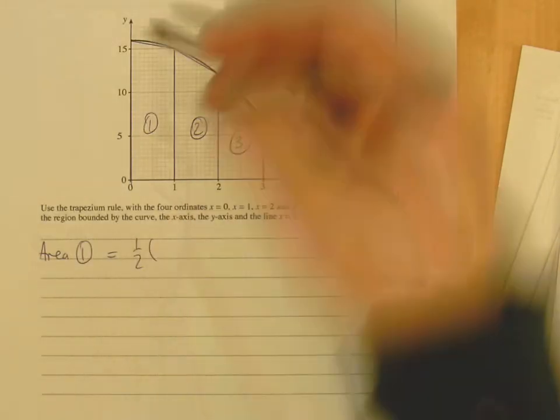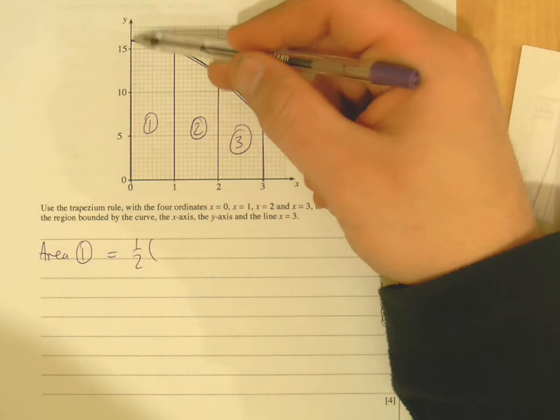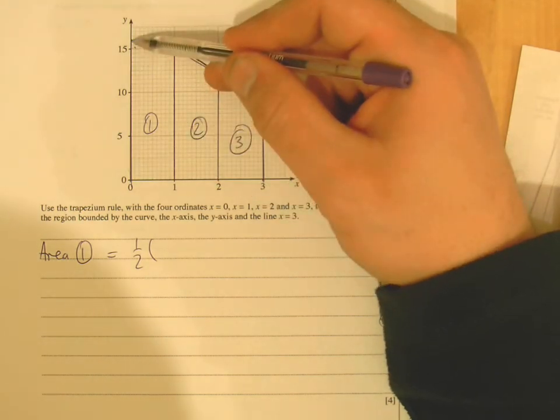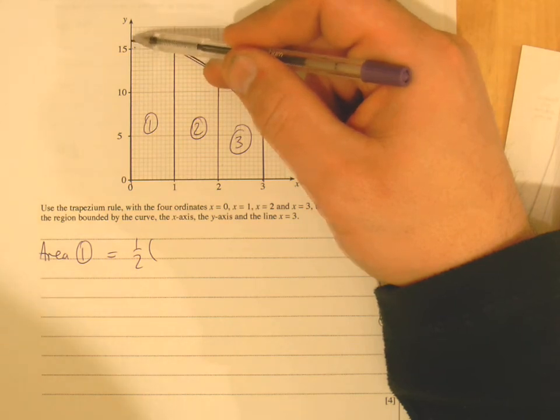So you've got half, now your a will be that there, that length there, which I think that takes you to 16 if I'm right. Okay, so I've done my scale right, yeah, so that's 16.